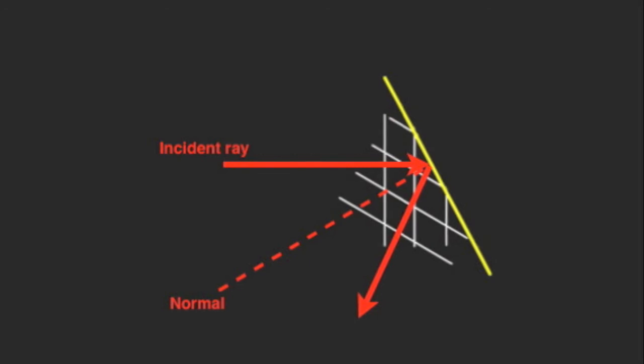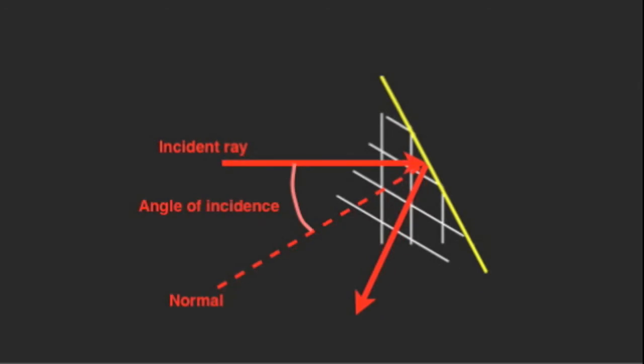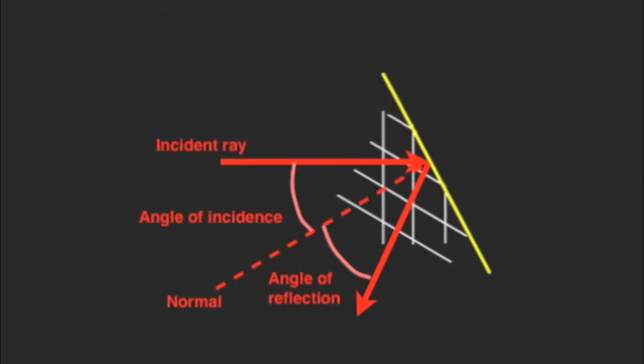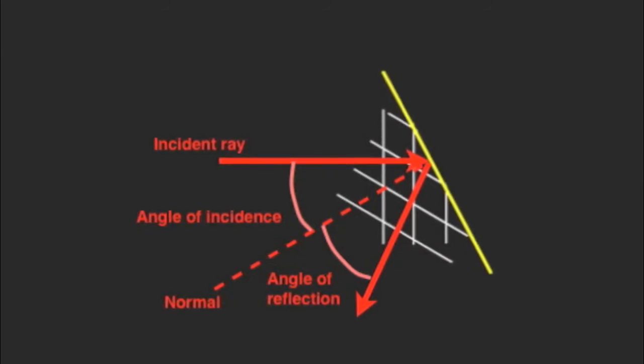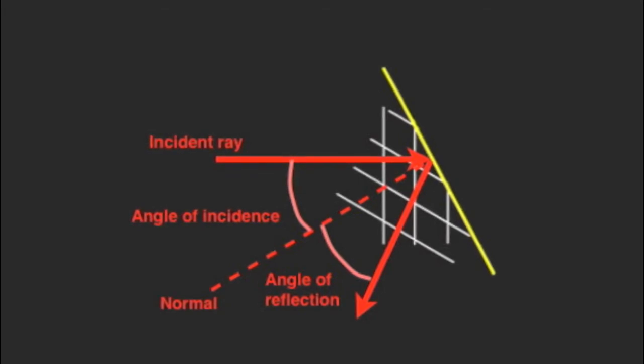We call the direction that the waves are coming into the reflector the incident ray. And we mark the angle between the incident ray and the normal, that is the angle of incidence. The direction of the outgoing waves is marked as the reflected ray. Note that the angle of incidence labeled on the diagram and the angle of reflection are the same.